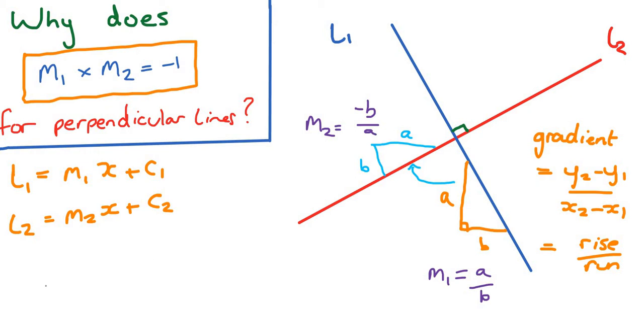Okay, so now let's multiply these two gradients. So m1 times m2, well that's a over b times minus b over a. The a's are going to cancel out. We're going to be left with minus b over b. And now the b's are going to cancel out. So we're just going to be left with minus 1.